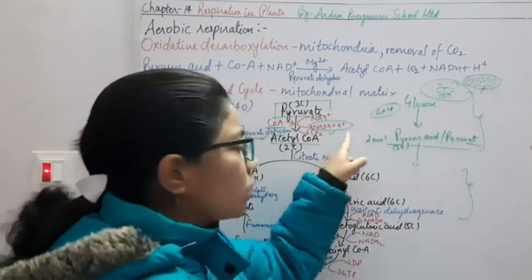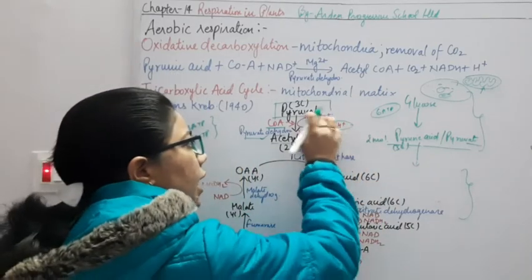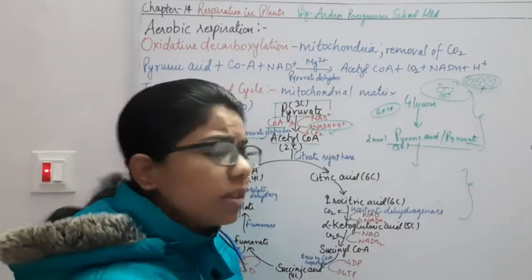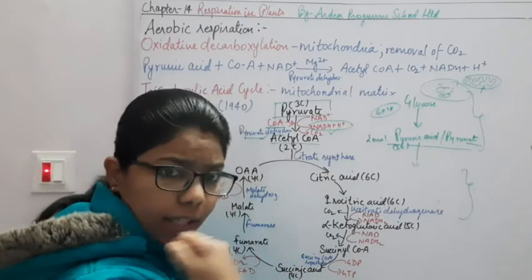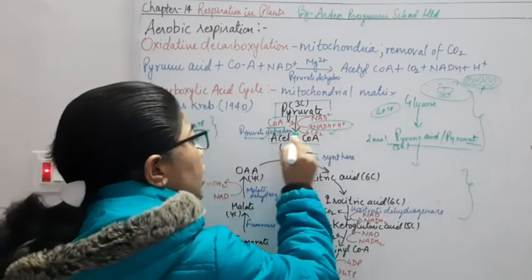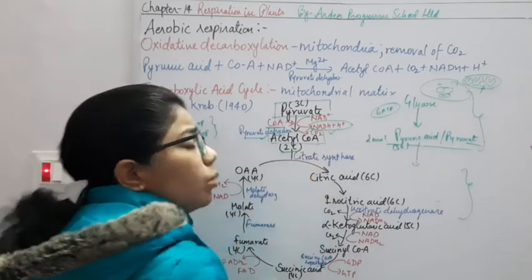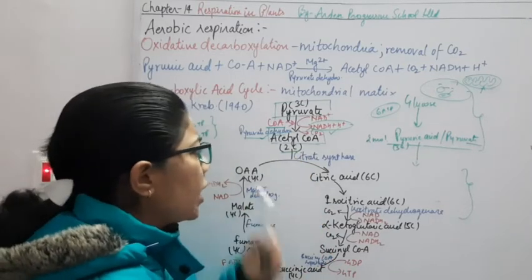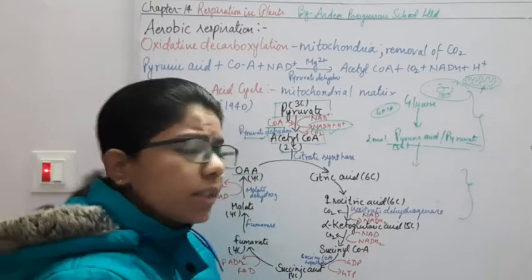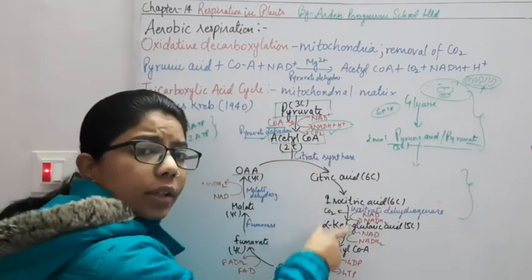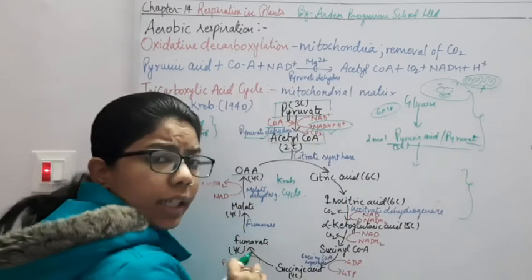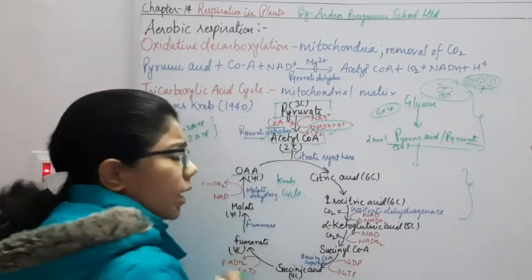The NADH₂ will go into the electron transport system to swap its energy — just like an ATM, we swap the card and get money. Now, the acetyl coenzyme A formed is a 2-carbon compound. This 2-carbon compound will combine with oxaloacetic acid in the first step of the Krebs cycle. The acetyl coenzyme A now enters the Krebs cycle.